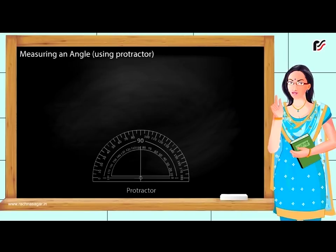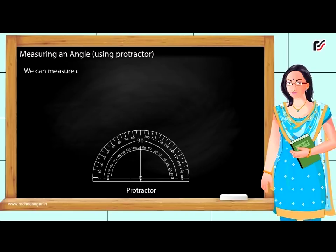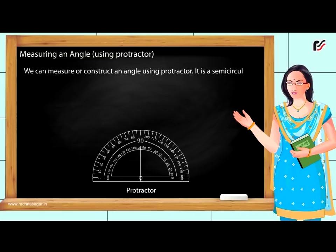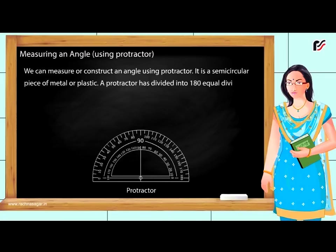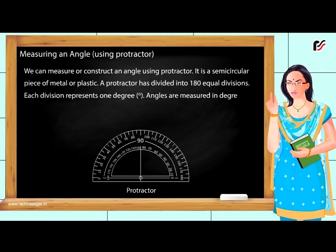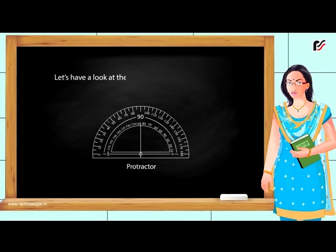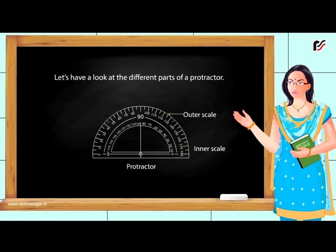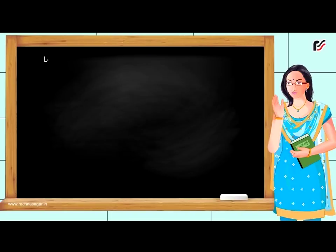Measuring an angle using protractor: We can measure or construct an angle using protractor. It is a semicircular piece of metal or plastic. A protractor has divided into 180 equal divisions. Each division represents one degree. Angles are measured in degrees. Let's have a look at the different parts of a protractor: Outer scale, inner scale, baseline, reference point.